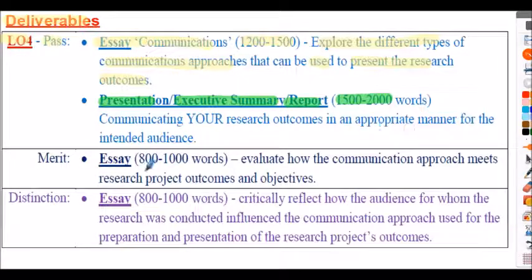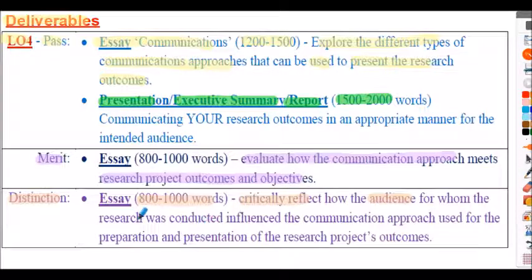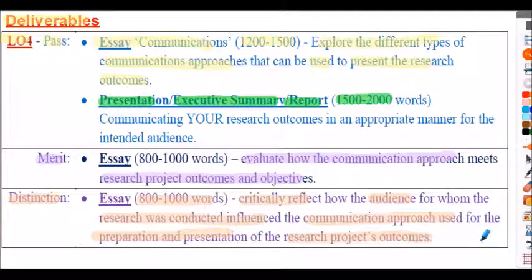If you want to go for merit grades, you have to do a further essay evaluating how the communication approach met the research project outcomes and objectives — around 800 to 1,000 words. For distinction grade, another essay is required where you critically reflect on how the audience for whom the research was conducted influenced the communications approach used for the preparation and presentation of the research project outcomes. I'll talk more about those for people who want to engage with them.